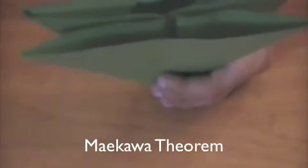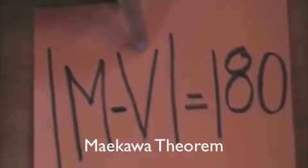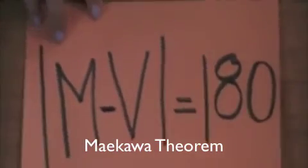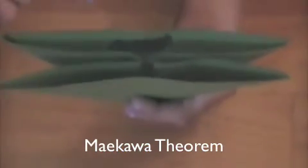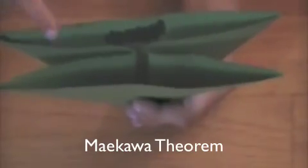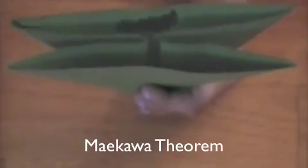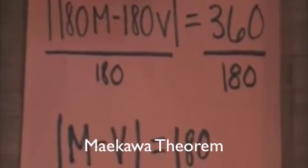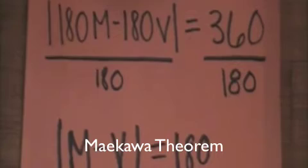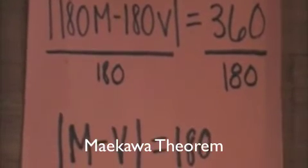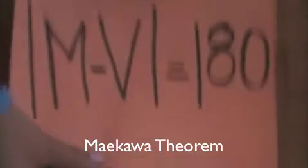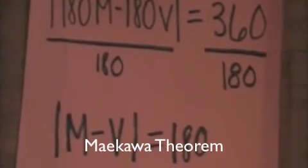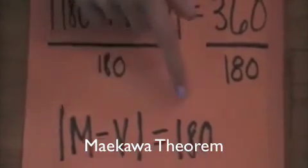This equation is also determined by this equation. M minus V equals 180 degrees. Now, let's say that a fold rotates 180 degrees at each mountain fold and negative 180 degrees at each valley fold. Therefore, then you have this equation: 180M minus 180V equals 360. Divide each side by 180 and to prove that this equation is correct, M minus V equals 2.